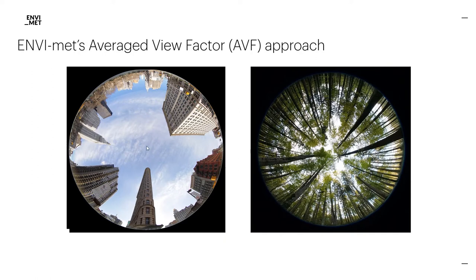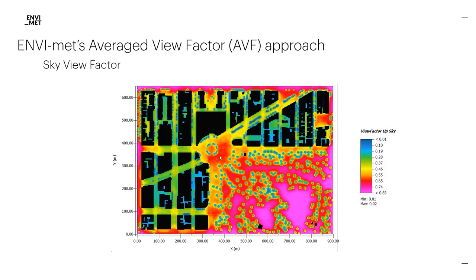The AVF approach works somewhat like a fish-eye lens. It looks at which parts of the sky are visible, which parts are covered by buildings or vegetation. And it does this not just for the upper hemisphere, like in fish-eye photos, but also for the lower hemisphere. In ENVI-met, you can visualize the sky view factor: a cell underneath a tree doesn't see much sky, but a cell in an open field sees a lot of sky.